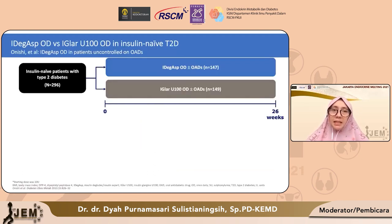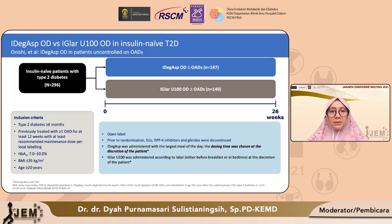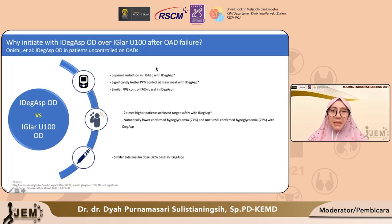Inisiasi insulin co-formulation IDeg-Aspart dibandingkan dengan inisiasi insulin basal pernah diteliti oleh Onisi dan kawan-kawan, melibatkan pasien diabetes tipe 2 yang naif insulin dengan HbA1c yang belum terkontrol. Pasien dibagi menjadi dua arm: yang pertama mendapatkan IDeg-Aspart dengan tetap melanjutkan OAD, dan yang kedua mendapatkan insulin basal dengan tetap melanjutkan OAD. Hasil penelitian menunjukkan bahwa pencapaian HbA1c lebih baik pada penggunaan insulin IDeg-Aspart, karena ada komponen prandial insulin, dibandingkan dengan insulin basal saja. Ada pencapaian target postprandial yang lebih baik dengan IDeg-Aspart, dan yang tidak kalah pentingnya adalah kejadian hipoglikemi lebih rendah pada kelompok IDeg-Aspart dibandingkan kelompok insulin basal.